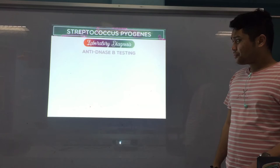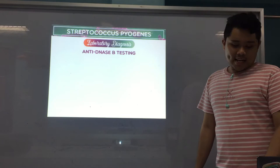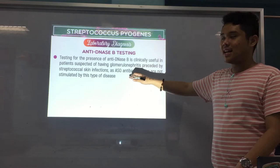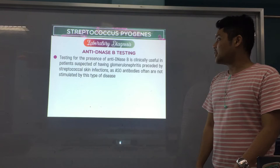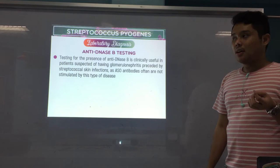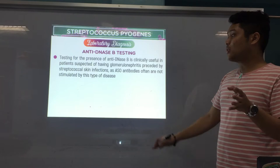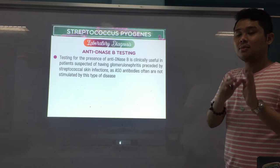The next test is anti-DNase B. Recall that DNase B is one of the enzymes produced by S. pyogenes — there are four types: A, B, C, and D. We test for B. Anti-DNase B is useful in patients suspected of having glomerulonephritis preceded by streptococcal skin infections, because ASO antibodies are not elevated in this type of disease — they are not stimulated.